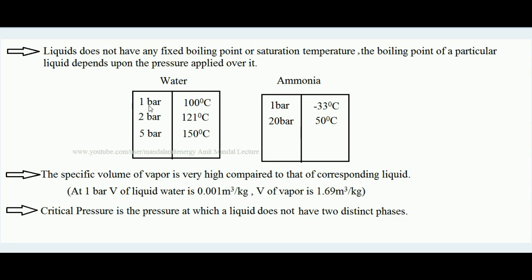Here is some data: at one bar pressure the boiling point of water is 100°C, at two bar pressure it is 121°C, and at five bar pressure it is 150°C. Not only for water, but for all liquids — for ammonia, at one bar the boiling point is -33°C, and at 20 bar the boiling point is 50°C.